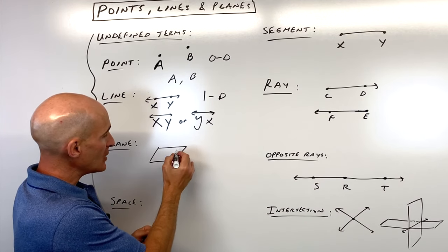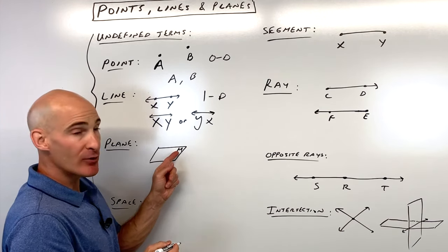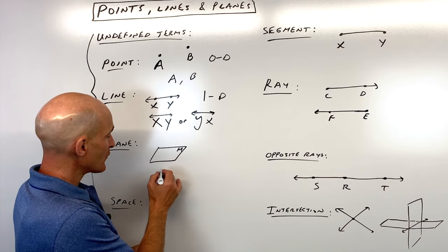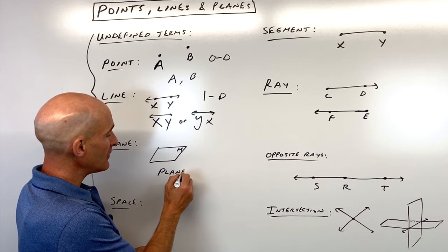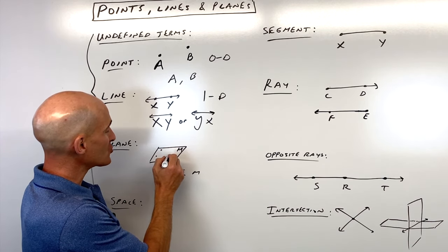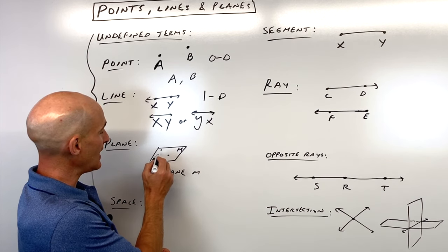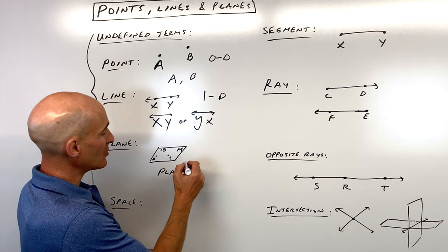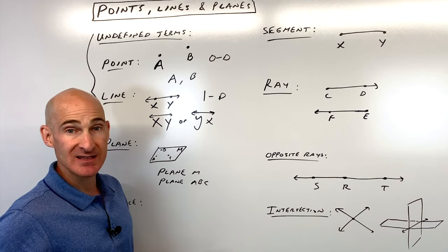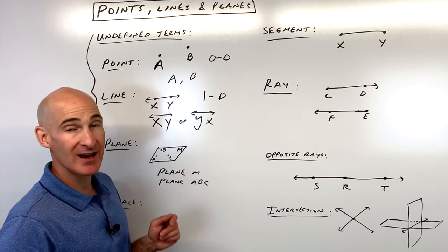But when you label a plane, you can either use a capital letter, like it'll indicate in one of the corners of the plane. So for example, I could call this plane M. Or what you can do is you can pick three points that are not in a straight line. Say for example, like if this is A, B, and C, I could write this as plane A, B, C. That's another way to do it. But you want to make sure that they're not in a straight line.